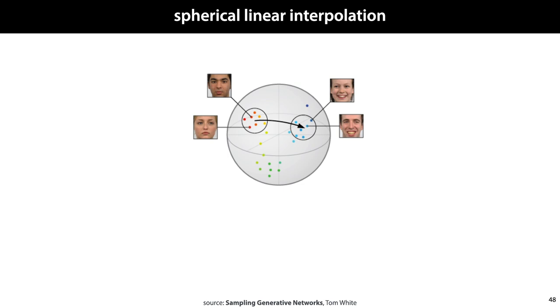For that reason, we often get better results if we interpolate along an arc over this hypersphere instead of along a straight line. This is called spherical linear interpolation.